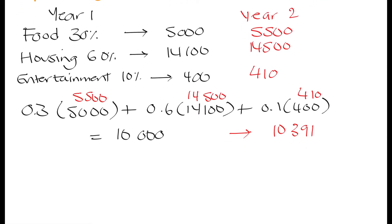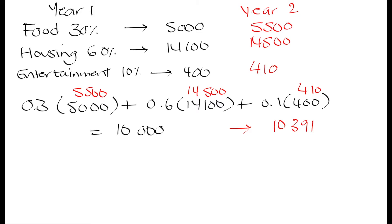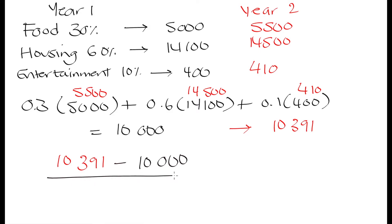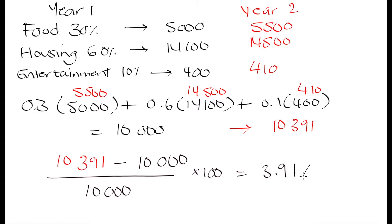So if we wanted to calculate that in terms of a percent change, we can take our second year cost, 10,391, minus our first year cost, 10,000, and divide that by our first year cost, 10,000. We do final minus initial over initial times 100 — that is how you calculate a percent change. If you put that into a calculator, you are going to get 3.91%. So the increase in prices from year one to year two was 3.91%, and it turns out that the way we measure inflation is somewhat similar to this.